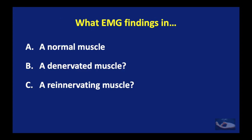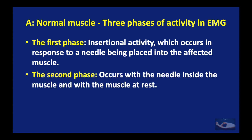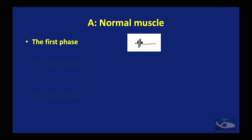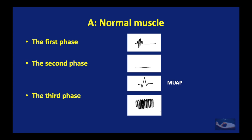We shall now see the electrical activities within the muscle. In any normal muscle, there are three phases of activity. The first is insertional activity, which occurs in response to a needle being placed into the muscle for EMG recording. The second phase occurs with the needle inside the muscle and the muscle at rest — there is not much electrical activity in this phase. When the muscle starts contracting, the third phase occurs: the motor unit action potential, or MUAP, is formed, and with increased strength of contraction, increased electrical activity is recorded.